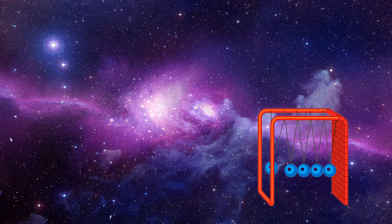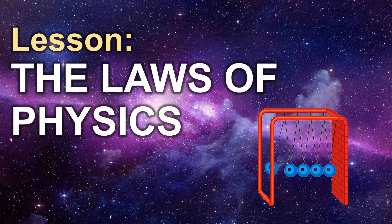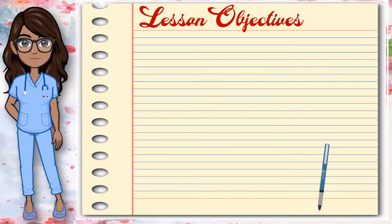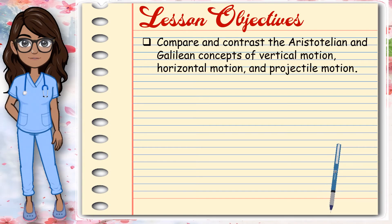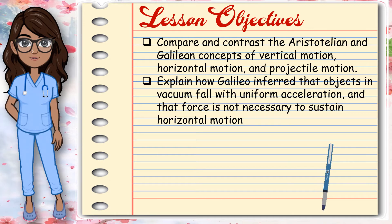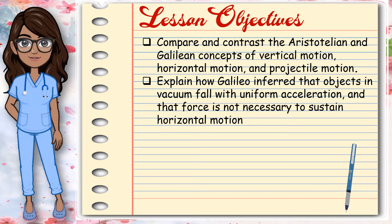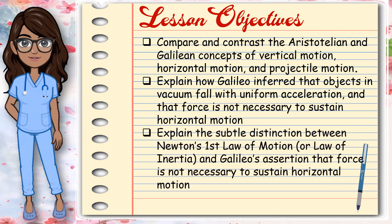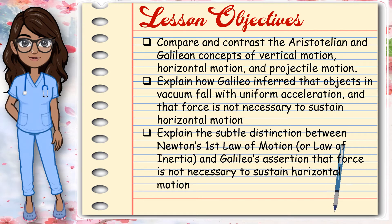Our lesson today is The Laws of Physics. At the end of this module, you should be able to compare and contrast the Aristotelian and Galilean concepts of vertical motion, horizontal motion, and projectile motion. Explain how Galileo inferred that objects in a vacuum fall with uniform acceleration and that force is not necessary to sustain horizontal motion. And explain the subtle distinction between Newton's first law of motion, or law of inertia, and Galileo's assertion that force is not necessary to sustain horizontal motion.